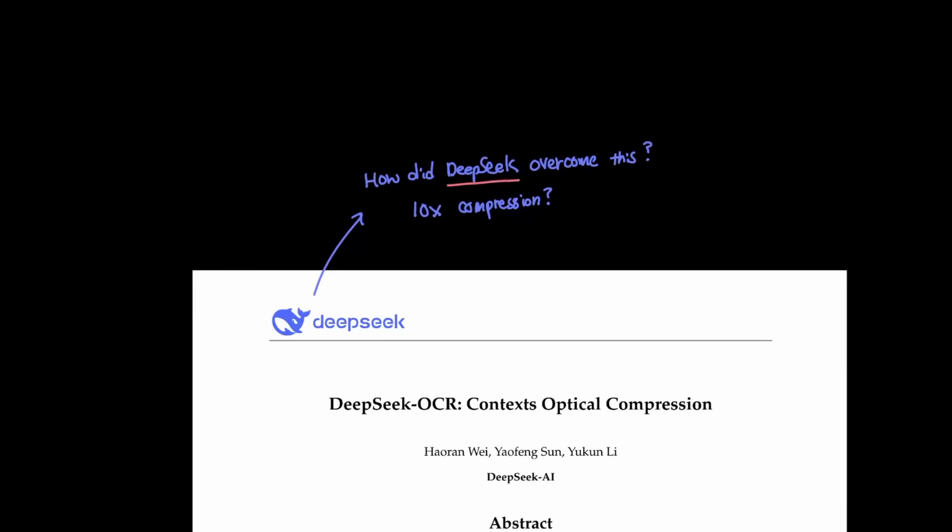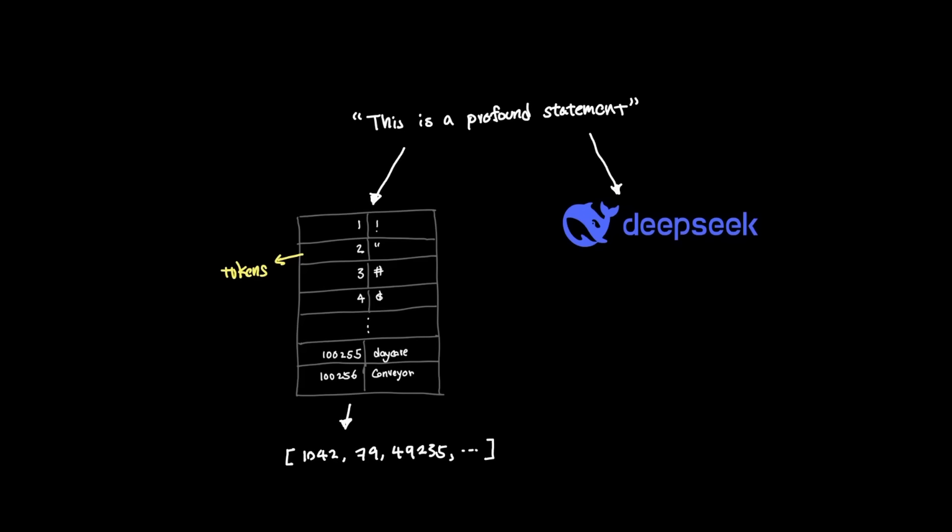So the question is this: How did DeepSeek compress data without losing information? DeepSeek OCR used vision models to essentially sidestep data compression happening in text tokens, but rather they use images as input and latent space as a way to compress how information is represented.